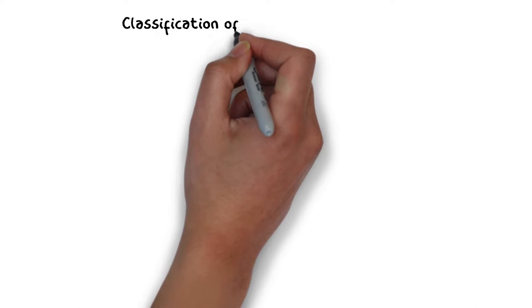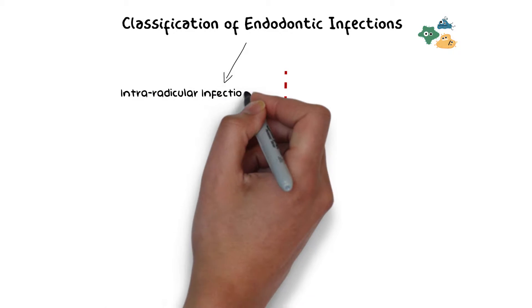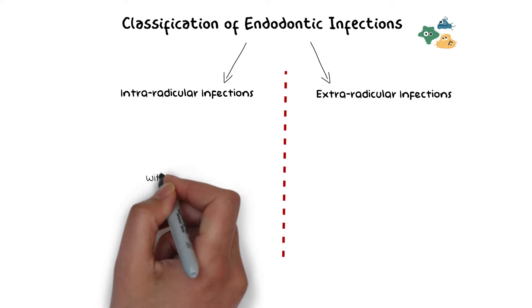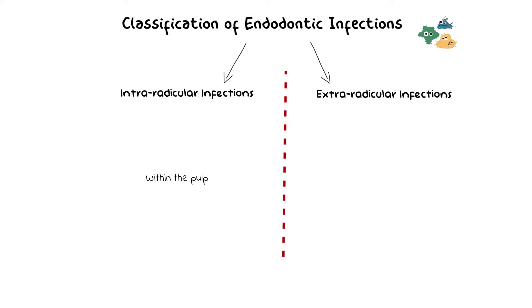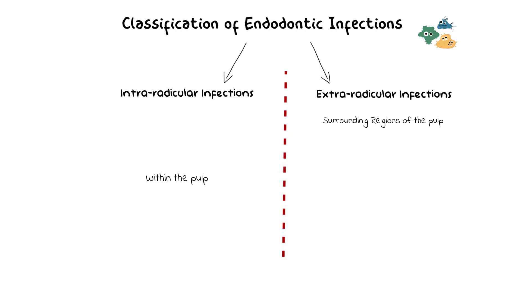Endodontic infections are usually classified according to the anatomical location as either being intra-radicular or extra-radicular. The intra-radicular infections are those that occur within the pulp, and the extra-radicular infections are those that occur outside the pulp, mostly around the apical regions of the tooth. The intra-radicular infections are further classified into three categories: primary infections, secondary infections, and persistent infections. It is important to learn about these individual infections in order to successfully eradicate them.